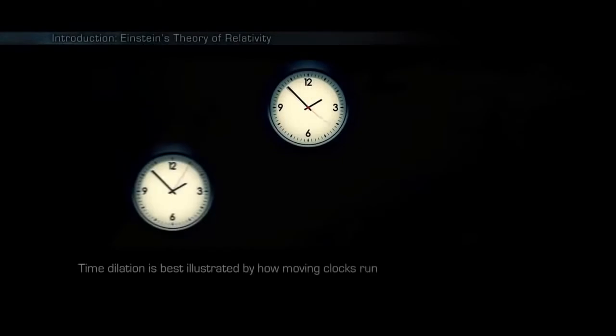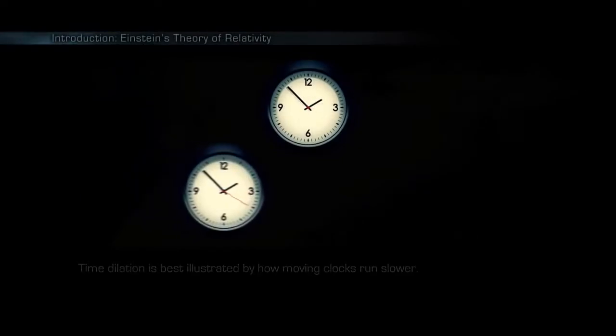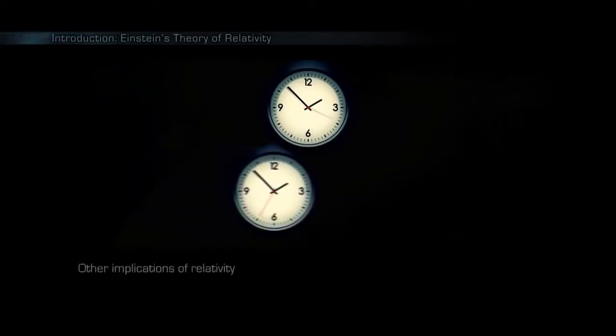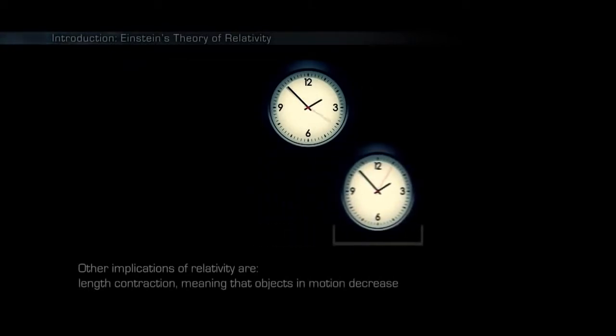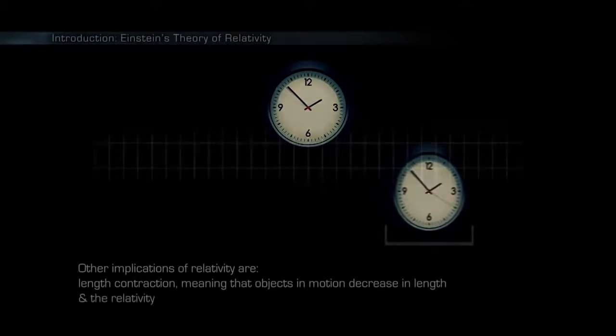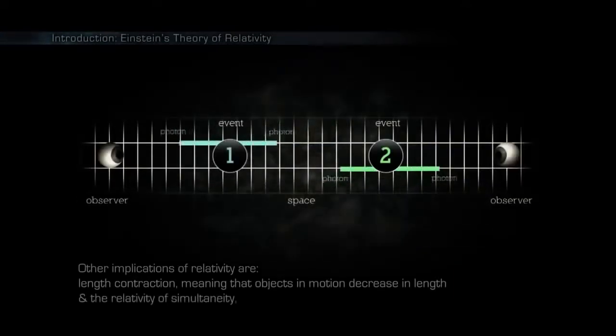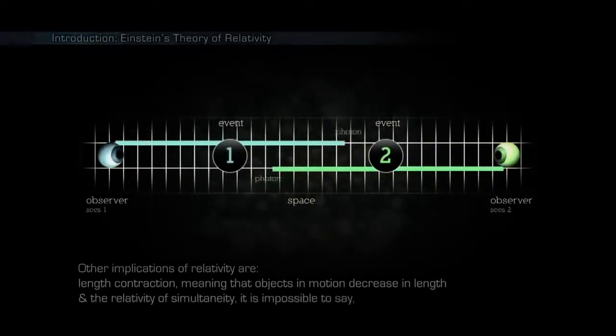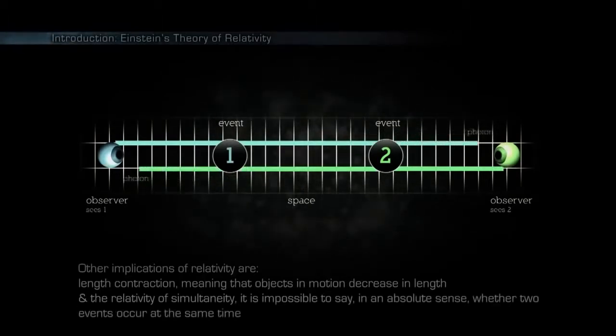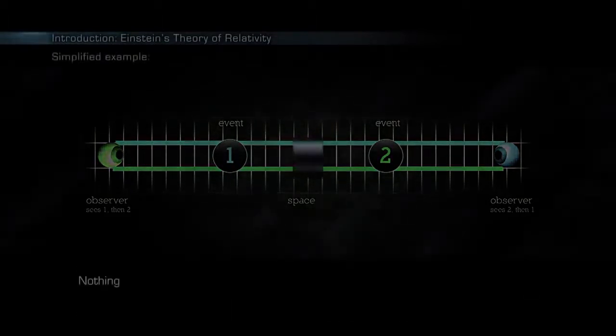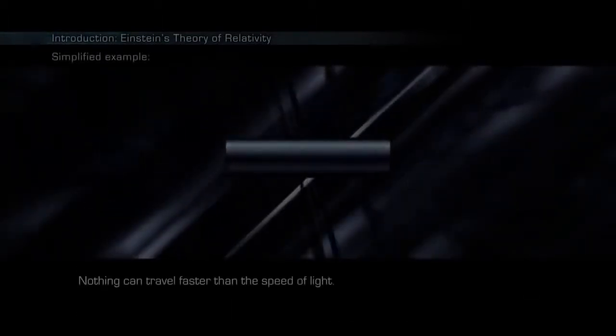Time dilation is best illustrated by how moving clocks run slower. Other implications of relativity are length contraction, meaning that objects in motion decrease in length, and the relativity of simultaneity. It is impossible to say in an absolute sense whether two events occur at the same time when they are separated in space.